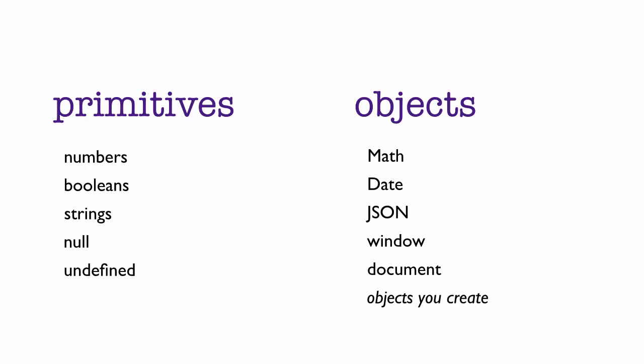It also means that both arrays and functions are also objects, which is surprising to some people. You might think of arrays and functions as fundamentally different things than objects, but in fact they are indeed objects.